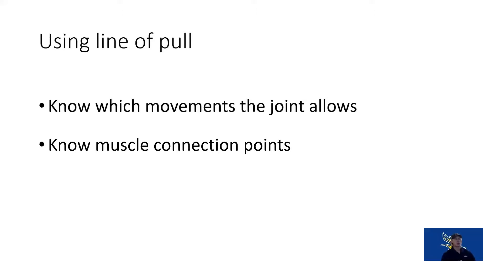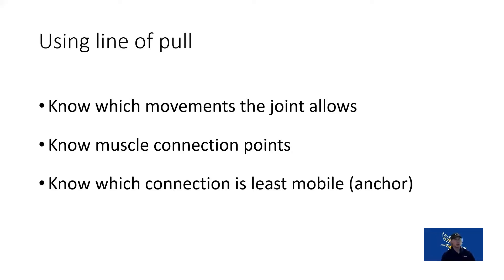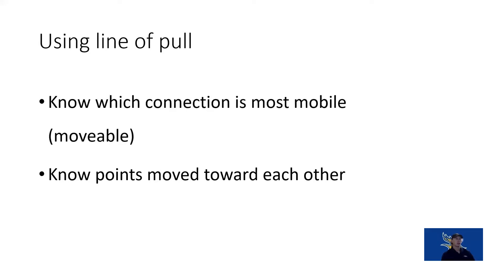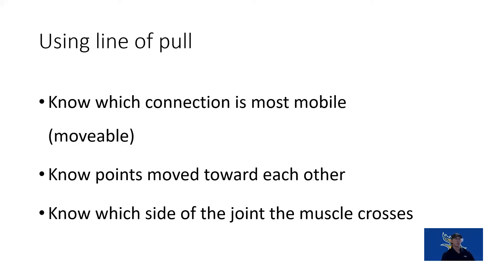We need to know what joint movements are allowed at the joints the muscle crosses, where the muscle connects, and where the fixed origin point is. The insertion is what moves, always toward that more stable origin point. Which side of the joint the muscle is on tells us the direction of movement.